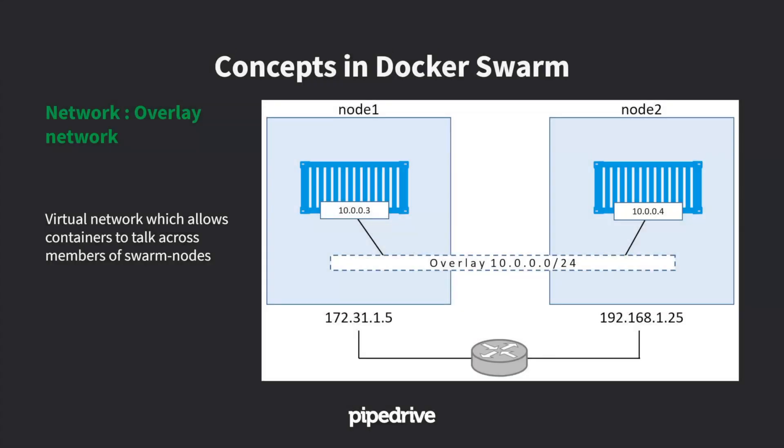There's also the overlay network. When you spin up two containers from the same service, they can communicate over the overlay network without exposing ports to the host machine. For example, if you have a web service on node one and a database on node two, you want the web service publicly accessible but not the database. The overlay network allows the web service to reach the database without exposing any ports.